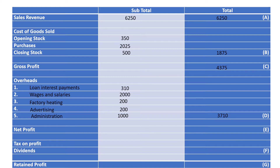Now the next thing we do is net profit — step 5. Net profit is what we really mean as profit: you take all the money you've earned and take off how much you've spent. So in this case we're going to take our gross profit figure and take off the rest of our costs — our overheads. Our answer is £665. Not much for the year, but hey.